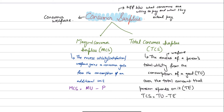Just a brief recap: consumer surplus is basically what consumers are willing to pay for a particular good minus what they actually pay. So if you're willing to pay ten dollars for something because you value it at ten dollars, and the price is six dollars, the consumer surplus for that unit would be four dollars. It's basically your consumer welfare — a welfare gain you've made by paying less for something that was worth more to you. It's a utility gain to the consumer.